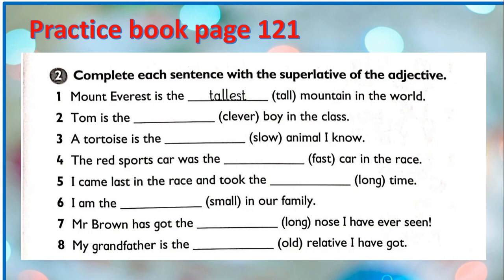Now let's complete each sentence with the superlative of the adjective. Number one: Mount Everest is the tallest mountain in the world. Number two: Tom is the cleverest boy in the class. Number three: A tortoise is the slowest animal I know. Number four: The red sports car was the fastest car in the race. Number five: I came last in the race and took the longest time. Number six: I am the smallest in our family. Number seven: Mr. Brown has got the longest nose I've ever seen. Number eight: My grandfather is the oldest relative I've got.